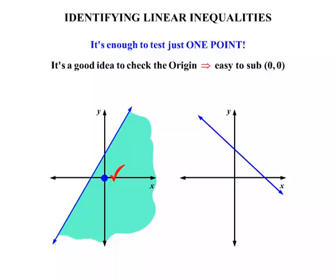If on the other hand we had another question, there's our line, again we substituted the point 0, 0, and if it did not work, if it led to a false statement, then we wouldn't shade this part, we would shade the other part. So that's how we identify which of the sides of the line needs to be shaded for the correct region.